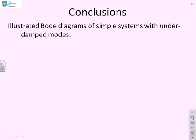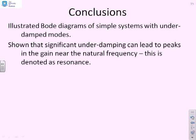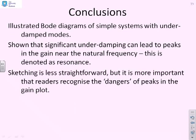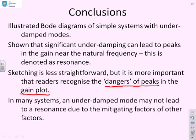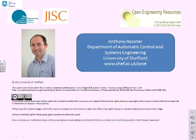Conclusions. We've illustrated Bode diagrams of simple systems with underdamped modes. We've shown that significant underdamping can lead to peaks in the gain near the natural frequency, denoted as resonance. Sketching is less straightforward, and it's important that readers recognize the dangers of peaks in the gain plot. If you have resonance and excite the system near that peak, you can get a lot of oscillation and fatigue. In many systems, an underdamped mode may not lead to resonance due to the mitigating effects of other factors.